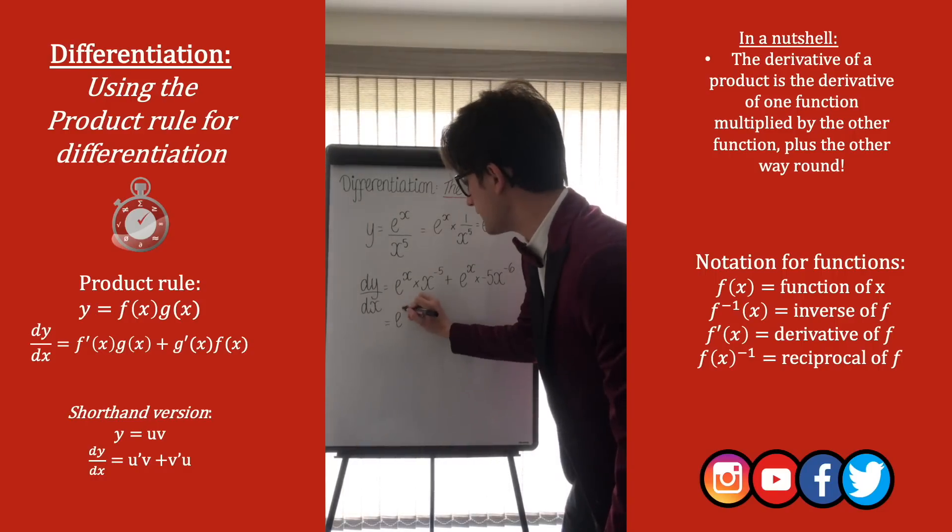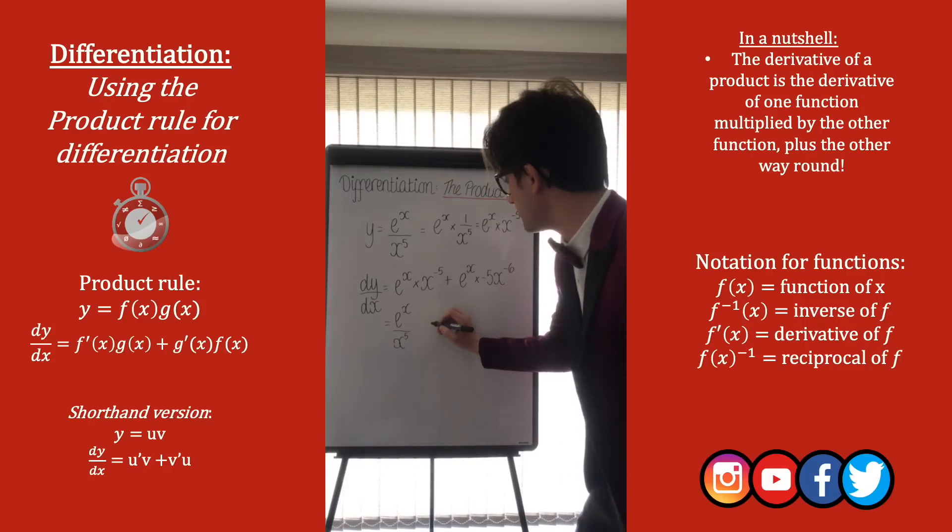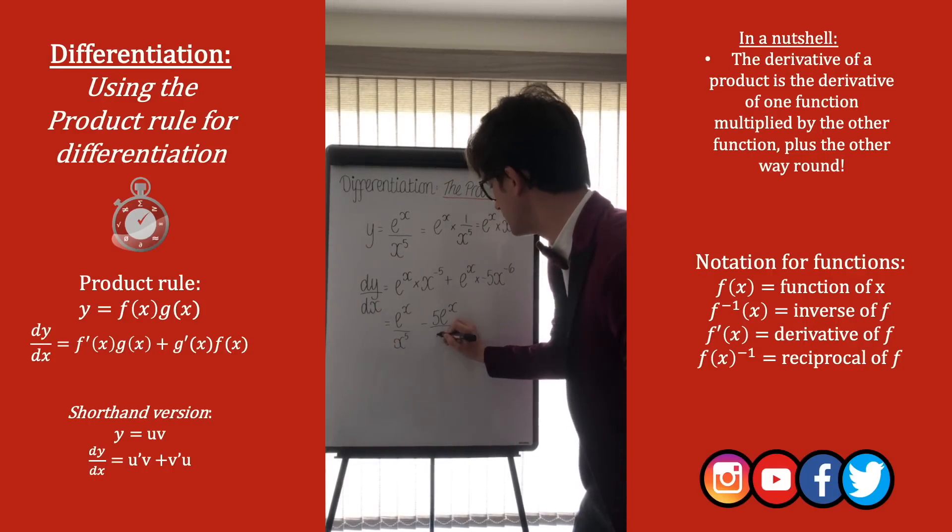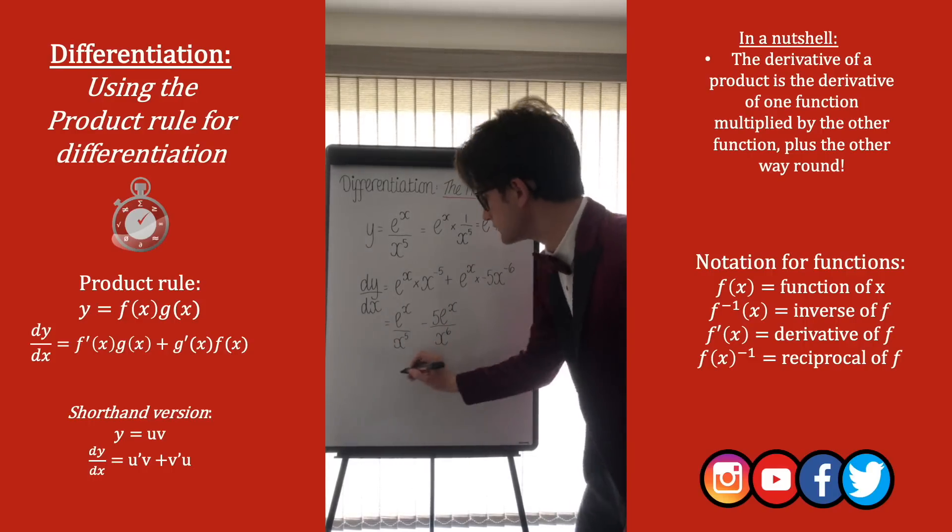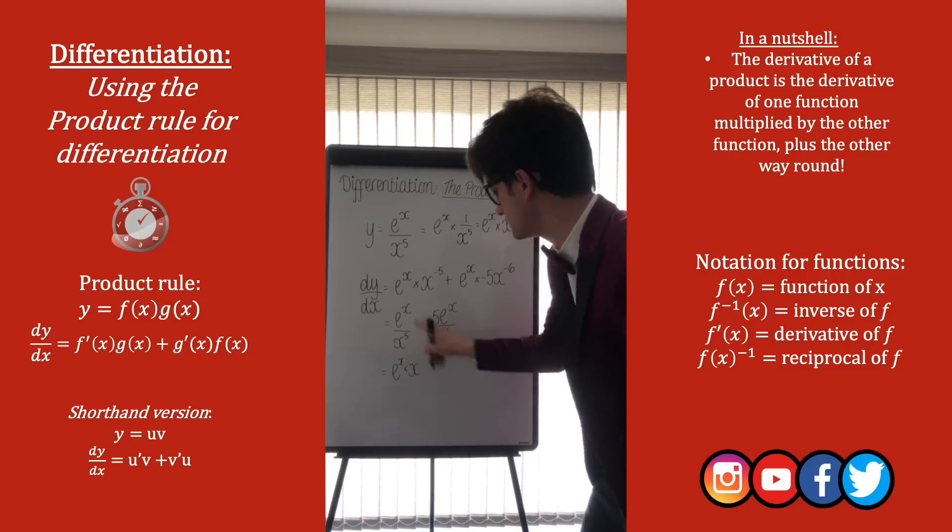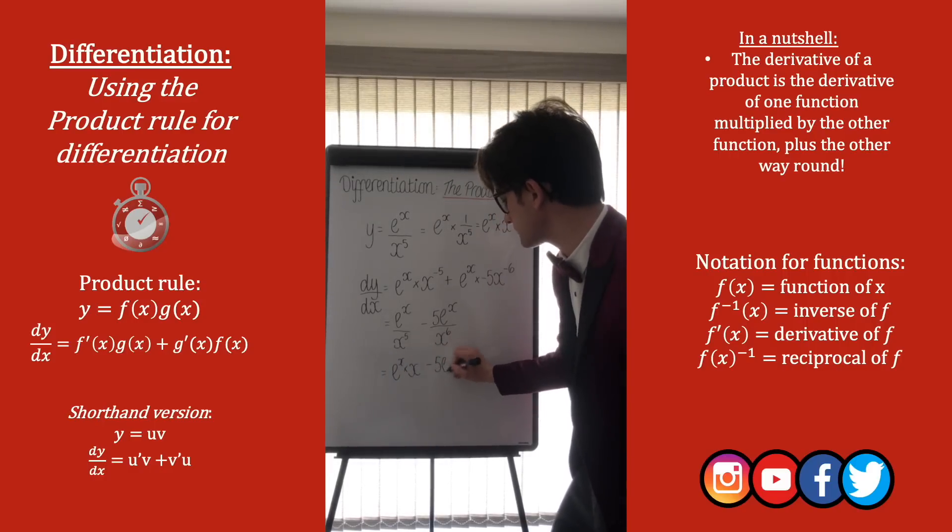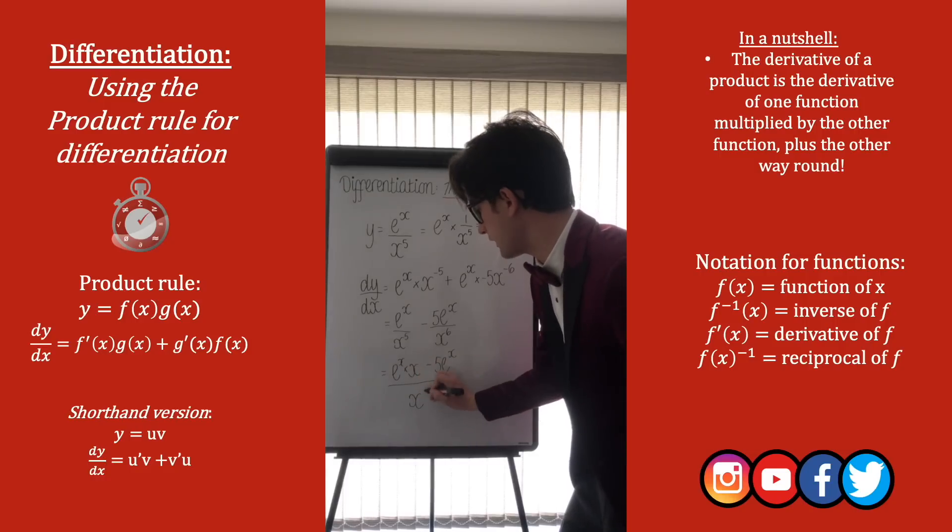Tidying this up a bit, we get e to the x over x to the power of 5, and we're going to be minusing 5 e to the x over x to the 6. And now we can combine this, and we'll get e to the x times x, so that we have a common denominator of x to the 6, and we're going to minus 5 e to the x, and this can now all be written over x to the power of 6.